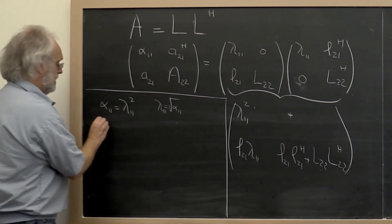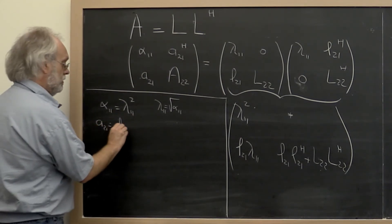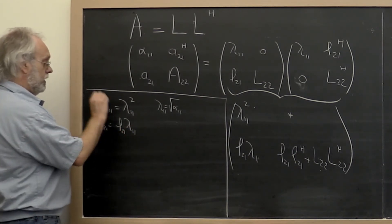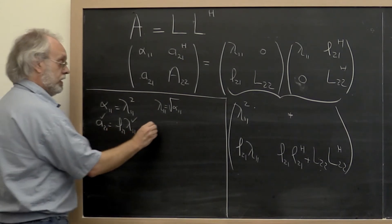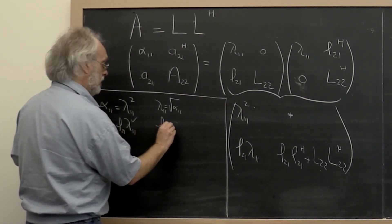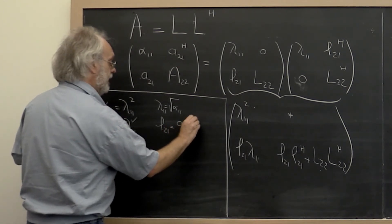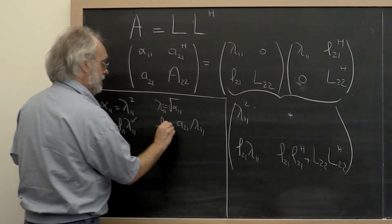Now at that point we know that A_2,1 must be equal to L_2,1 times lambda_1,1. But we now know what A_2,1 is. We know what lambda_1,1 is. And therefore we can compute L_2,1 to be equal to A_2,1 divided by lambda_1,1. We can assign that as follows.